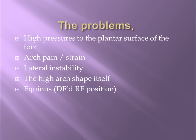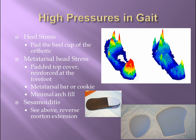We know the problems that the cavus foot offers — let's review them one at a time with orthotic recommendations. How do we decrease pressures in gait? The rigid hind foot and the equinus, in combination with extensor substitution exposing the metatarsal heads, leaving patients in pain to the forefoot, can be managed in multiple ways. For heel stress, you can simply pad the heel cup of the orthotic or place a top cover on top of your orthotic for padding. This will not only pad the heel but also the metatarsal heads, which are under stress in this foot type. If additional padding is needed on the forefoot, you can reinforce the forefoot with poron or EVA under the top cover. You can even decrease forefoot pressures by using a metatarsal bar or a metatarsal cookie.